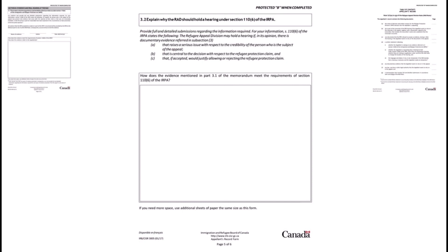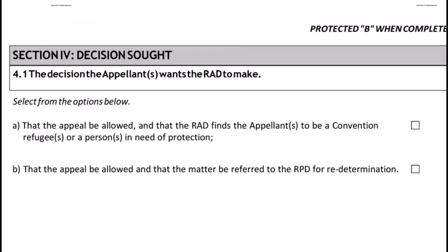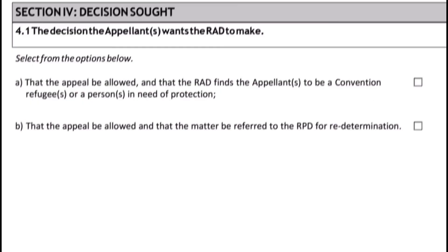In section 3.2, if you want the RAD to hold an oral hearing of your appeal, you need to explain why the RAD should hold a hearing. In section 4.1, you need to select the type of decision you're asking the RAD to make. You need to tick one of the boxes, but do not tick both.